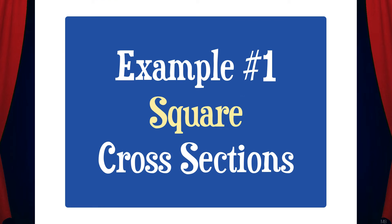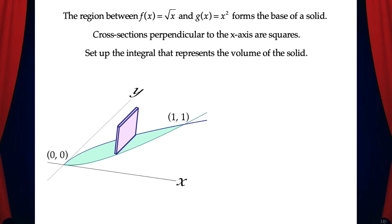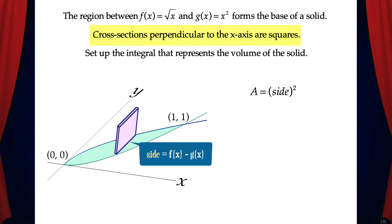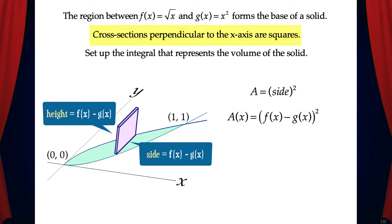Example 1: square cross-sections. The region between f(x) = √x and g(x) = x² forms the base of a solid. Cross-sections perpendicular to the x-axis are squares. To set this up, we need to find the area of one cross-section. The area of a square is side squared, and the side of this square is f(x) minus g(x), meaning the height is also f(x) minus g(x). So A(x) equals the quantity f(x) minus g(x), squared.